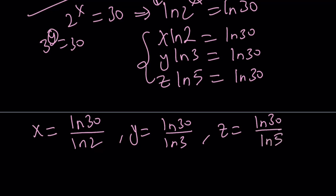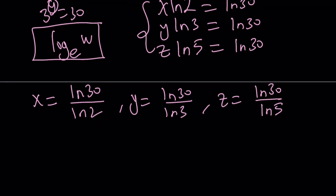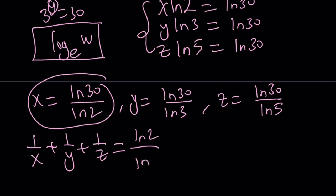By the way if you're not familiar with ln, it is the natural log with base e. Okay, I got x y z, why don't we just evaluate their reciprocals. Now if x is equal to this I'm just going to flip it, ln 2 over ln 30. This is going to be ln 3 over ln 30, and this is going to be ln 5 over ln 30.